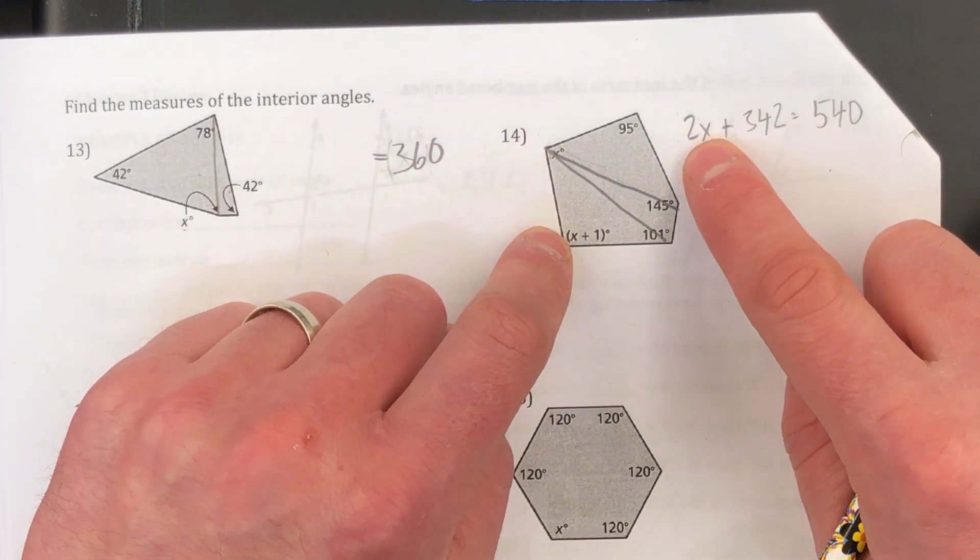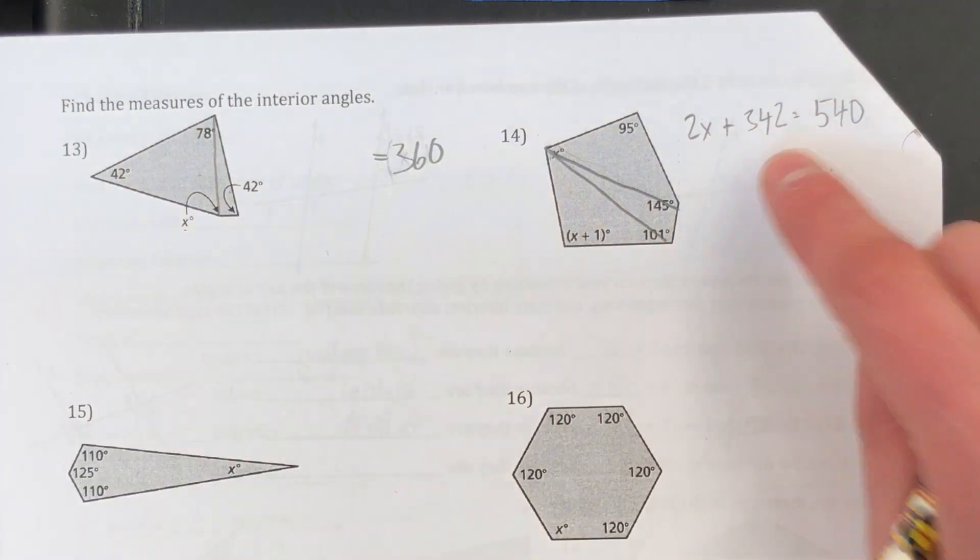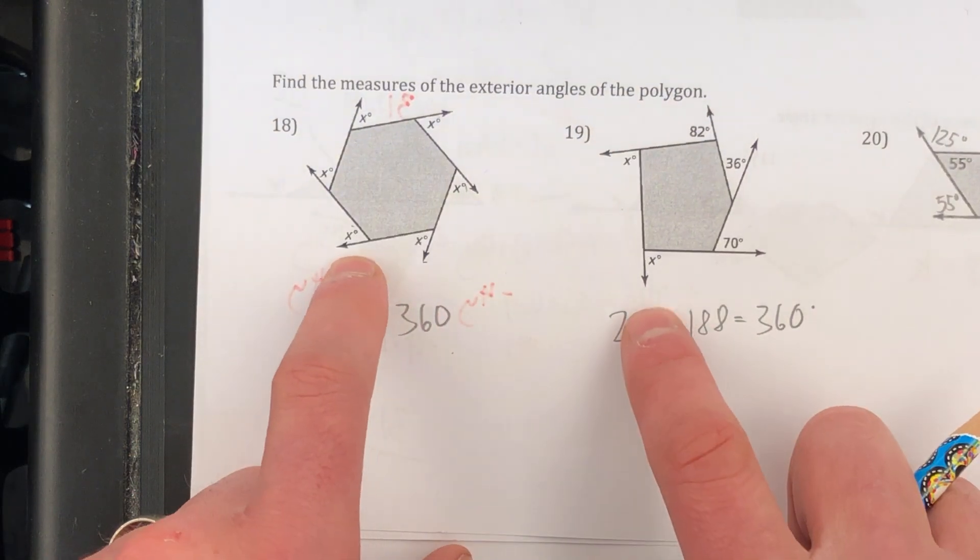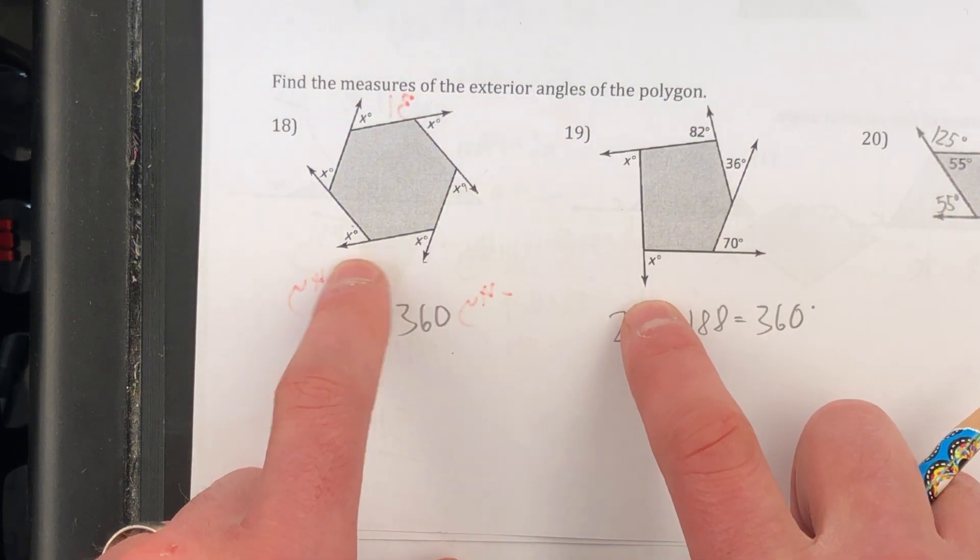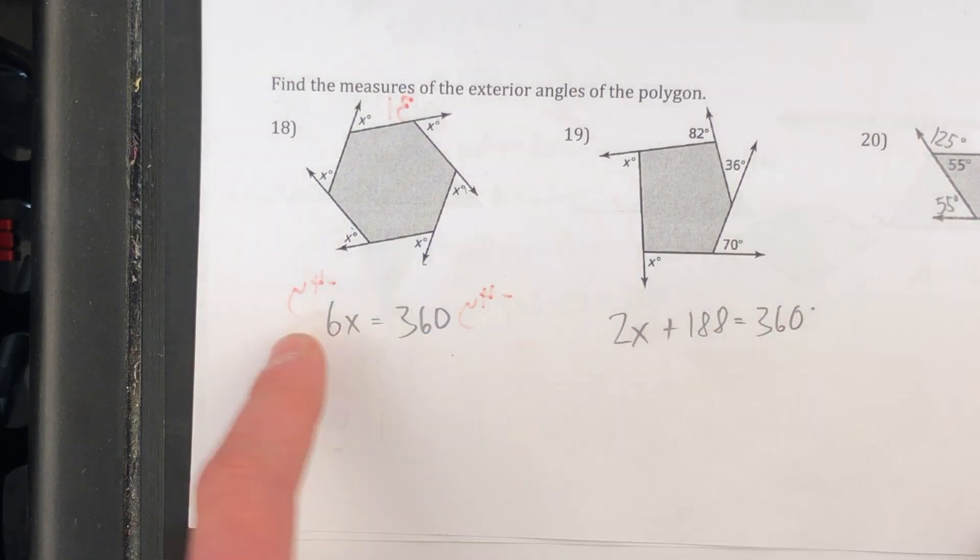So 1x plus 1x is 2x. Constant, constant, constant, constant, all add up to 342. Down here we have exterior angles of polygons. Exterior angle, it doesn't matter what kind of polygon it is. The sum must be 360. That's how I can go about setting up these equations.